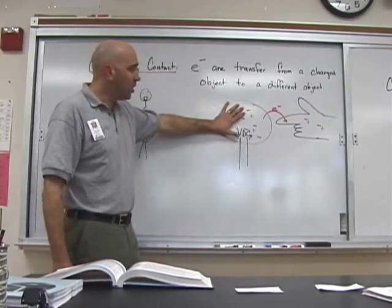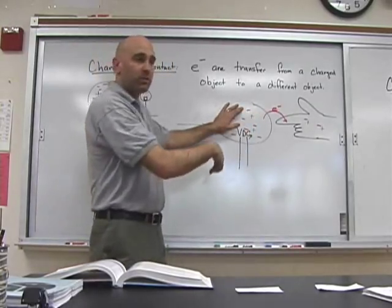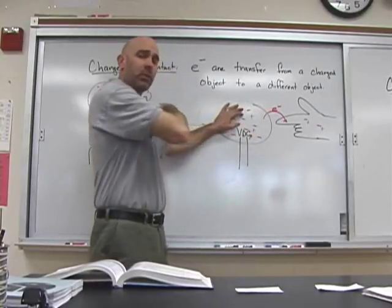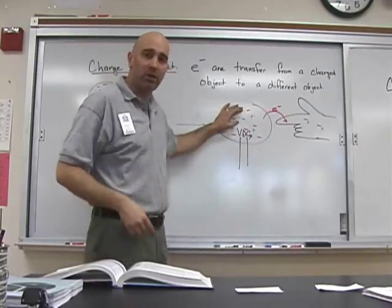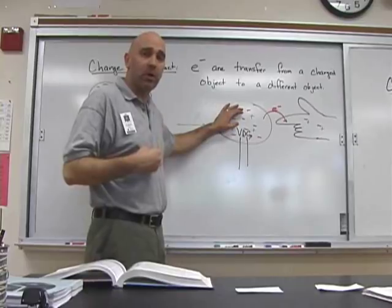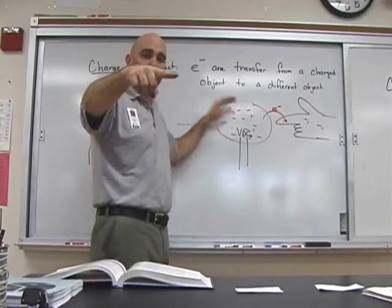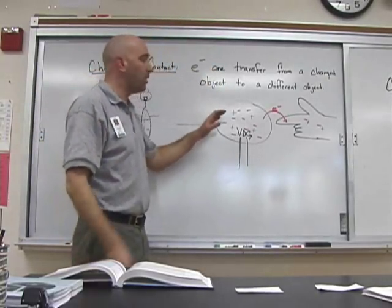Now, if I were to put my hand on the Van de Graaff generator, now what can all of these electrons do? As opposed to being confined to the Van de Graaff generator, they can start traveling down my arm. And I become part of this globe of the Van de Graaff generator. And I start building up a charge as well. So when I stick my finger out and you touch my finger, electrons are drained from me into you. And you get shocked as well.